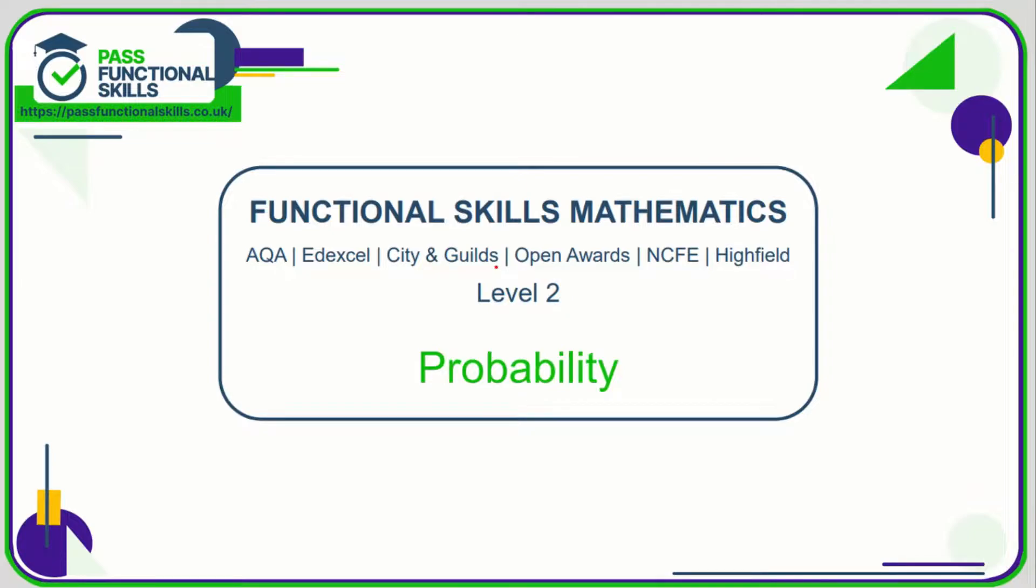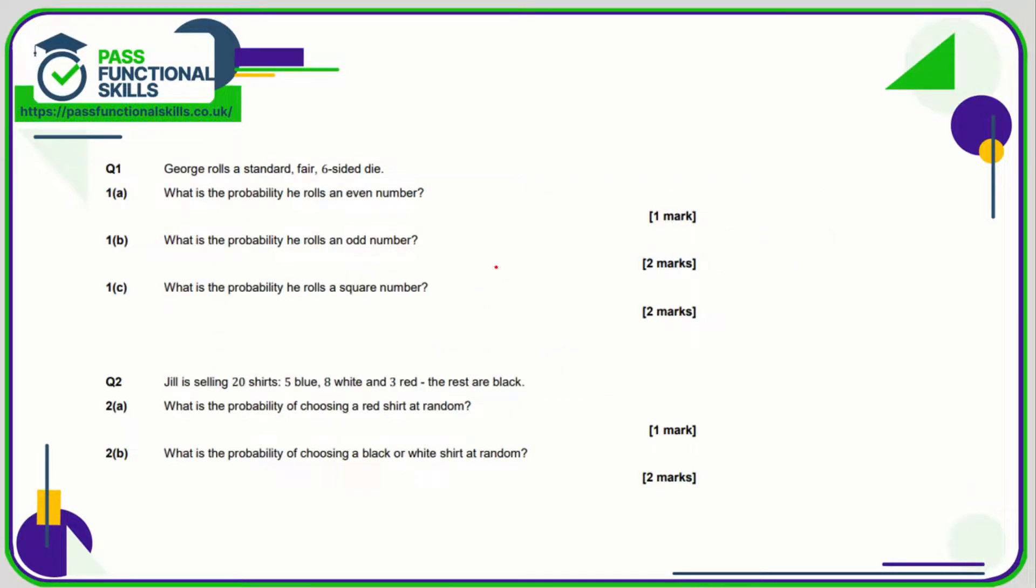Let's take a look at these probability questions. So first of all, what is the probability of rolling an even number on a six-sided die? Well, the numbers are either odd or they're even, so it's 50-50, so that's a half. So half odd as well.